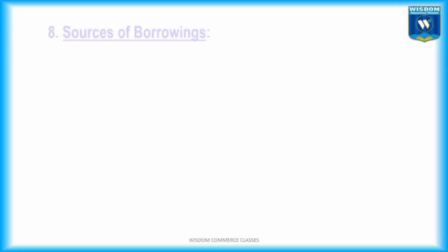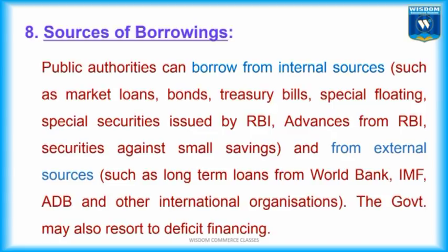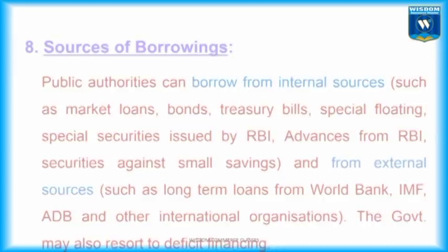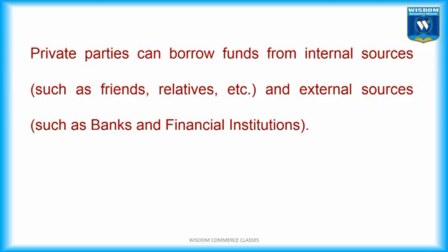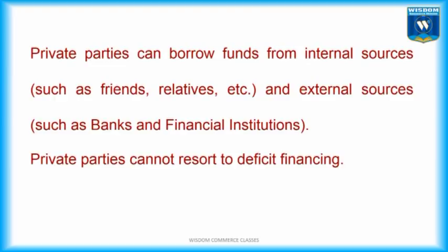Point No. 8 — Sources of Borrowings. Public authorities can borrow from internal sources such as market loans, bonds, treasury bills, special floating securities issued by RBI, advances from RBI, and securities against small savings; and from external sources such as long-term loans from the World Bank, IMF, ADB, and other international organizations. The government may also resort to deficit financing. Private parties can borrow from internal sources such as friends and relatives, and external sources such as banks and financial institutions. Private parties cannot resort to deficit financing.